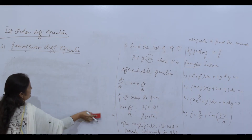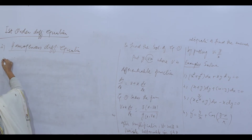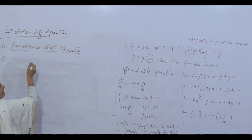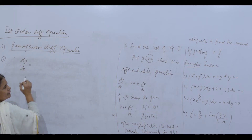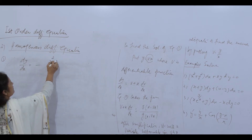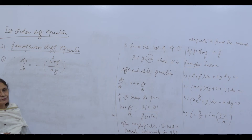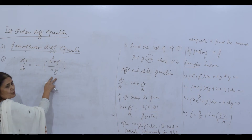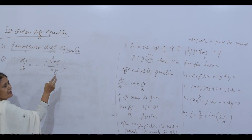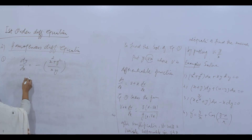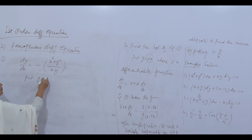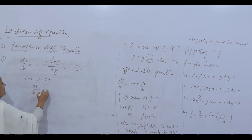Solution of number 1: rewrite as dy/dx = −(x² + y²)/(xy). The numerator x² + y² is a homogeneous function of degree 2, and the denominator xy is also a homogeneous function of degree 2. Since the equation is homogeneous, put y = vx, so dy/dx = v + x·dv/dx.